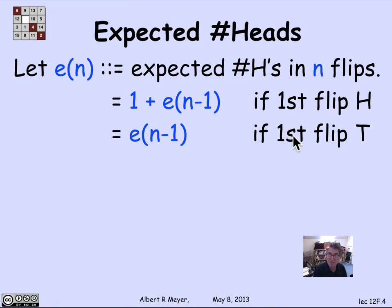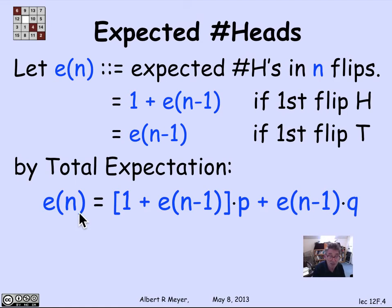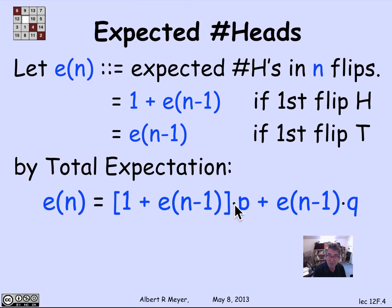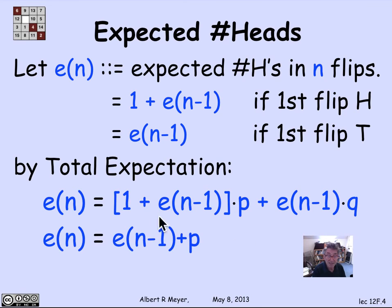If the first flip was a tail, then the total expected number of heads is simply the expected number of heads on the rest of the flips. These are two cases where I can apply total expectation. So by total expectation, the expected number in n flips is 1 plus E(n-1) times the probability of a head, plus E(n-1) times the probability of a tail. Multiplying through, that's p times 1 plus E(n-1) times p, and E(n-1) times q. Remembering that p plus q equals 1, this simplifies to E(n-1) plus p.